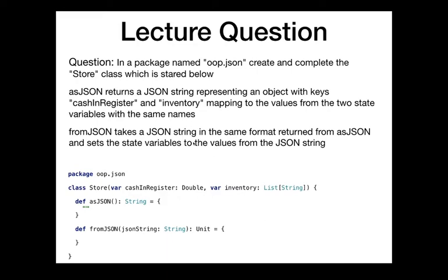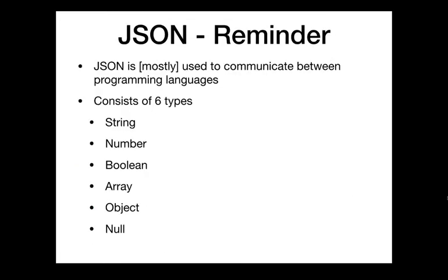The asJSON method is going to return a string in JSON format, returning the information of the store as a JSON string - an object with keys mapping to the two state variables. The fromJSON method accepts a string in that same format and populates the state variables, overwriting those values with whatever values are in the JSON string we're reading from.